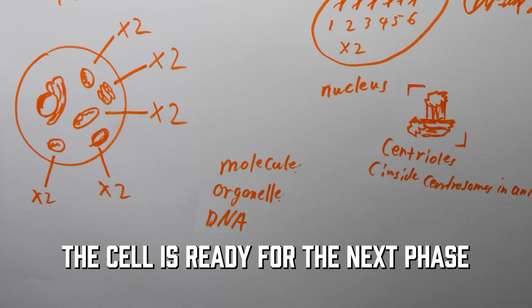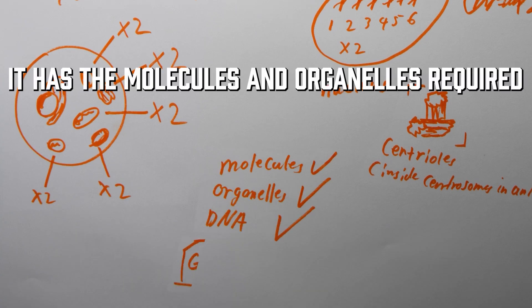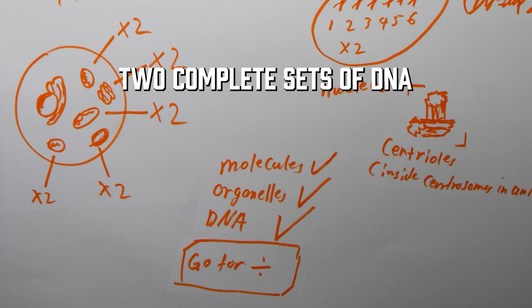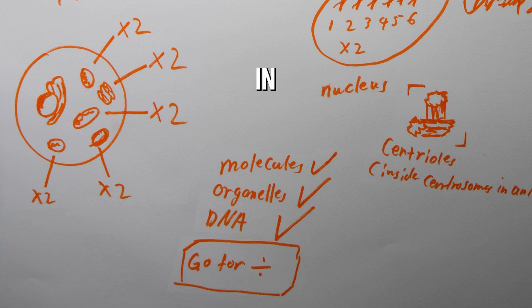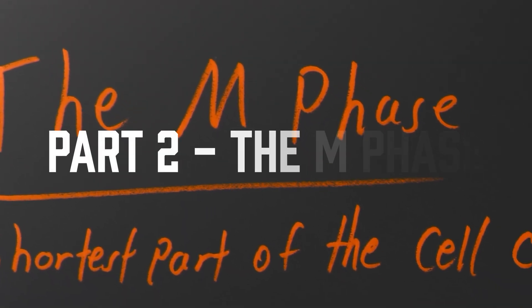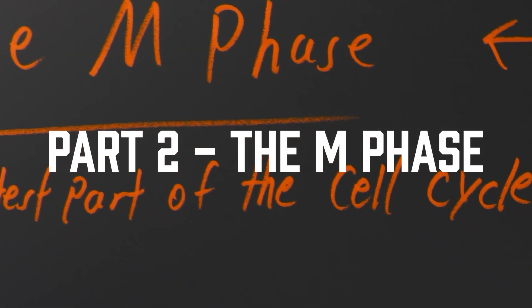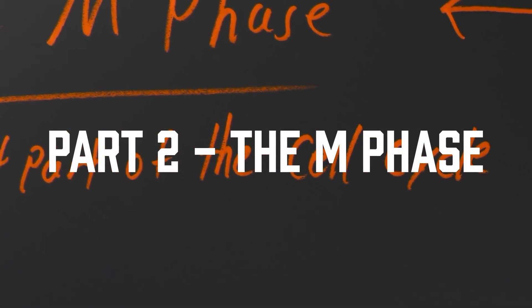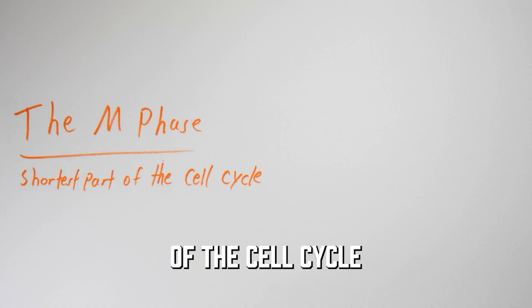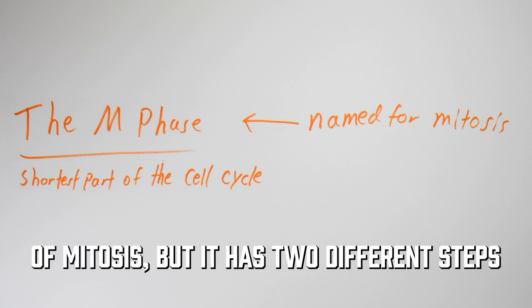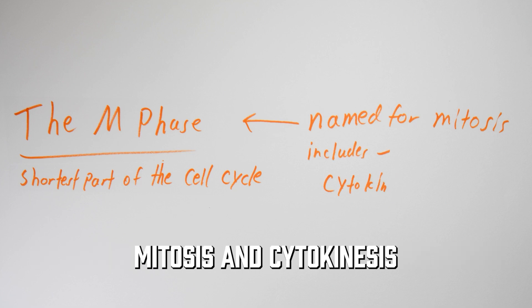By the end of the interphase, the cell is ready for the next phase. It has the molecules and organelles required, two complete sets of DNA — it just needs to divide, and it will do that next in the M phase. The M phase is the shortest phase of the cell cycle. It gets its name from the process of mitosis, but it has two different steps: mitosis and cytokinesis.